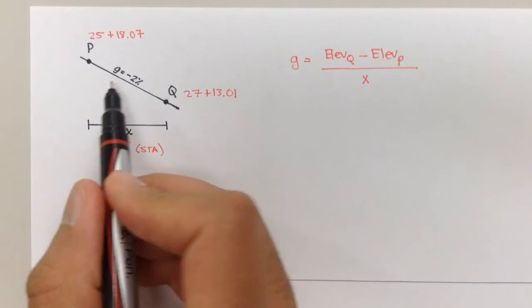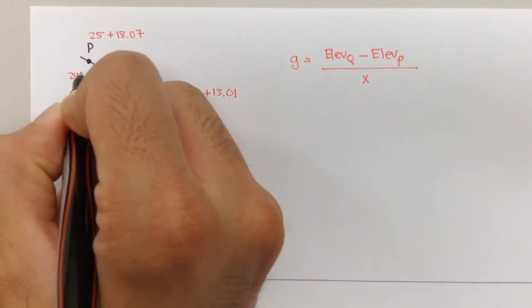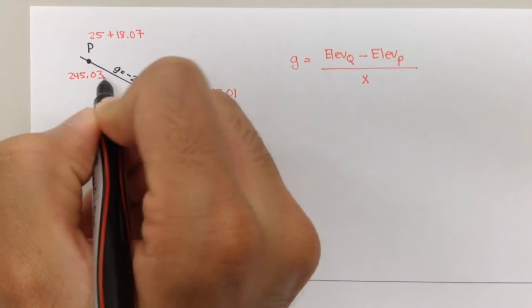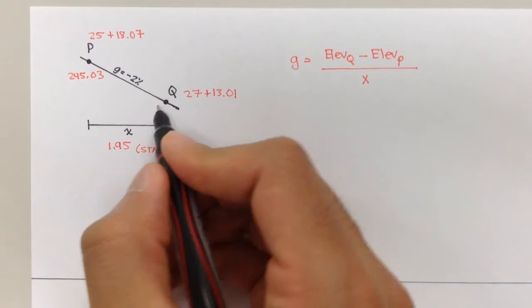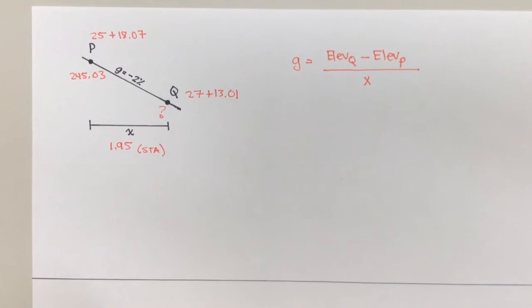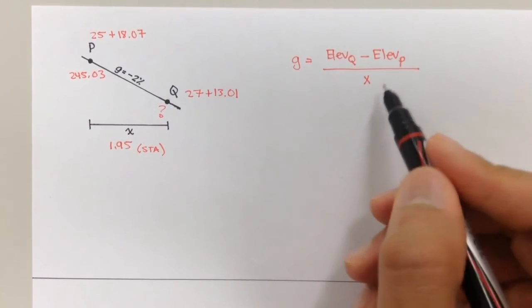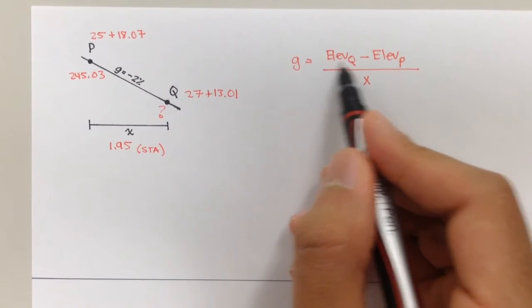Now, point P is at an elevation of 245.03. And our question, or what we want to find out in this problem is, what is the elevation of point Q? So mathematically, if we solve this equation for elevation Q, so if we multiplied by X on both sides,